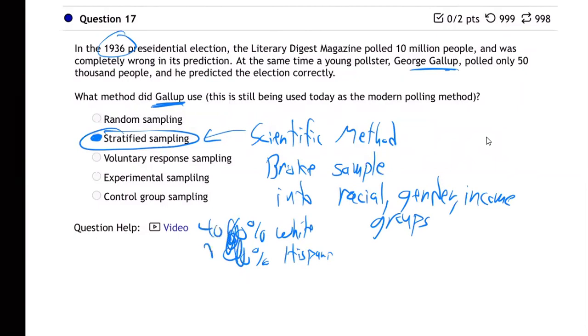Maybe this is 40 and 30, whatever, blah blah blah. He broke it up, and then men and women and rich and poor and live in the country, live in the city. And he made his sample stratified. Those are called strata, different groups, and then he was able to get to the truth.